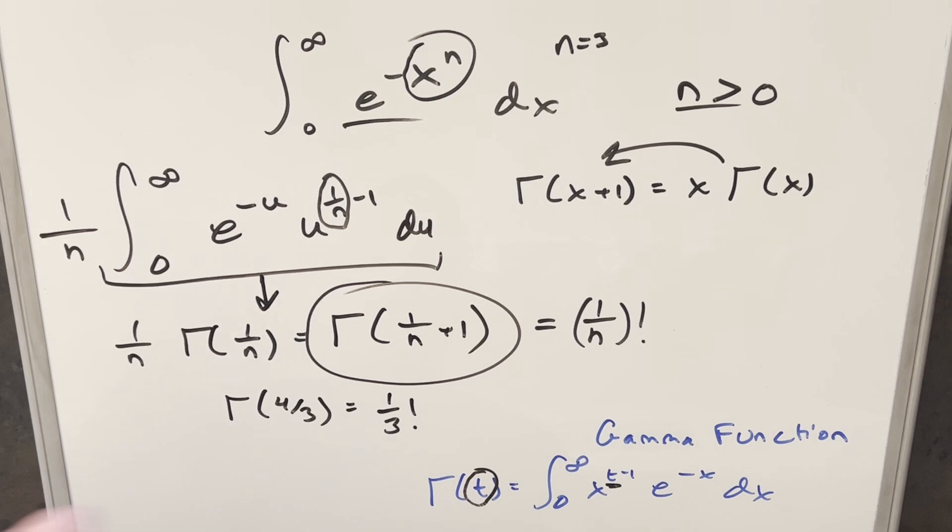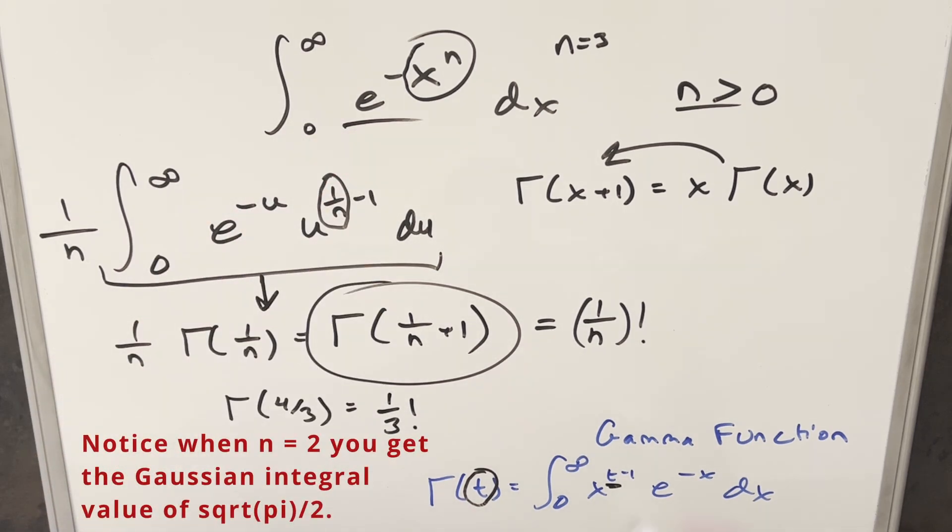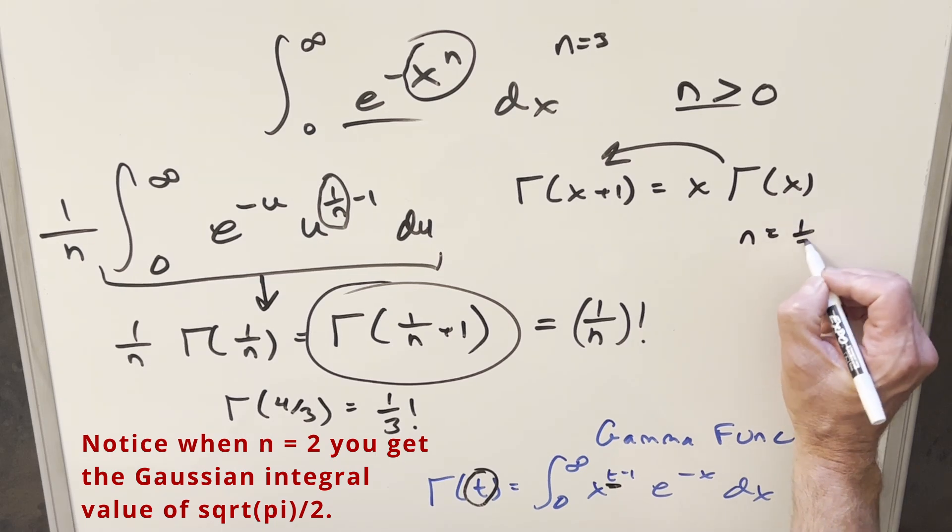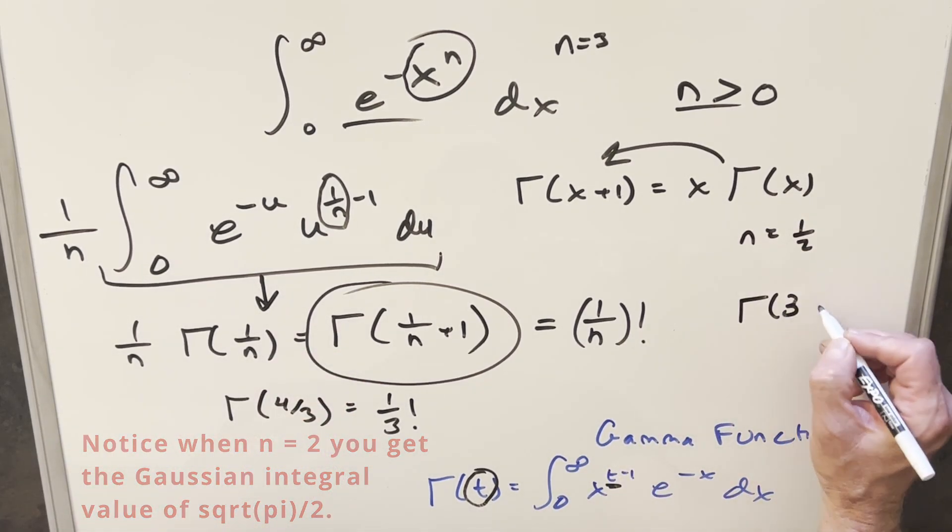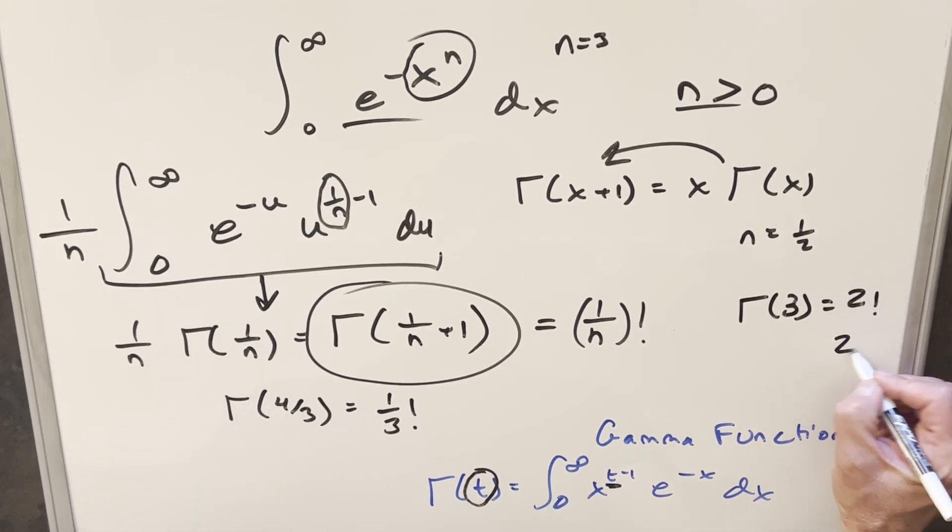Generally, for a non-integer value, people would prefer the gamma function, but you could do it either way. You'd also get some nice values. For example, if n is 1/2, you plug it in and end up with gamma of 3, which is the same as 2! or just 2. So that's not a bad one.